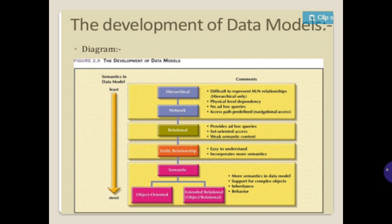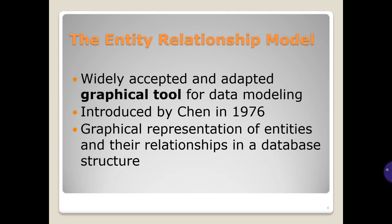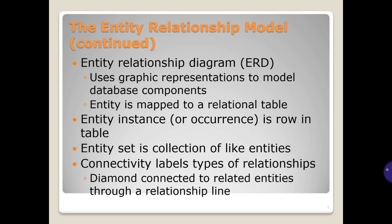The Entity-Relationship model is a widely accepted and adapted graphical tool for data modeling, introduced by Chen in 1976. It provides a graphical representation of entities and their relationships in a database structure. The Entity-Relationship Diagram (ERD) uses graphic representations to model database components. An entity is mapped to a relational table, an entity instance or occurrence is a row in a table, and an entity set is a collection of like entities. Connectivity labels define types of relationships, with a diamond connected to related entities through a relationship line.